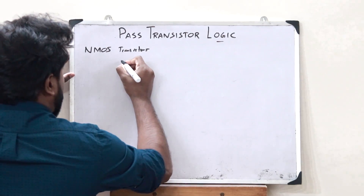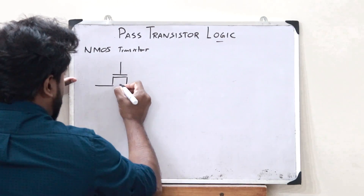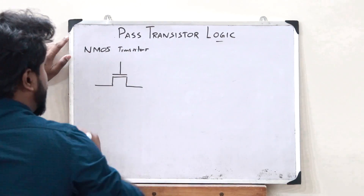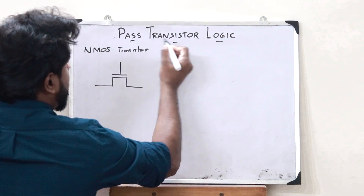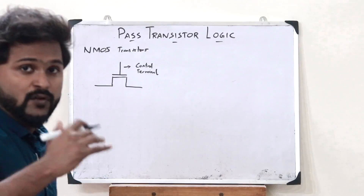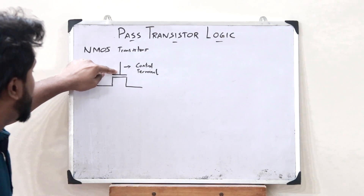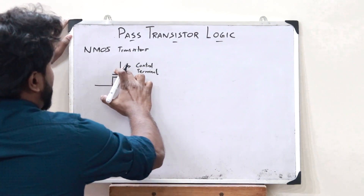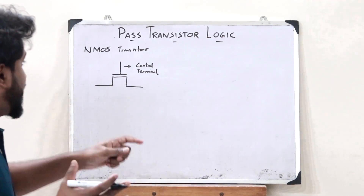Now let us take a particular NMOS transistor. We know that this is the gate terminal of an NMOS transistor. In order to implement a pass transistor logic, we take this particular terminal as a control terminal. In the case of an NMOS transistor, if the input at this terminal is 0, then that transistor is off. But if the input is 1, then this transistor is on.